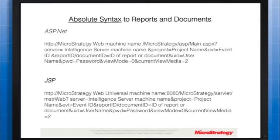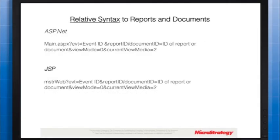Because of this limitation, avoid using absolute paths to link between objects. Illustrating the ASP.NET interface, generic web or mobile server full hyperlink syntax is shown on the first link on the screen. Notice that the parameters are joined with an ampersand. Illustrating the JSP interface, generic MicroStrategy web universal or MicroStrategy mobile server universal syntax is shown on the second link.